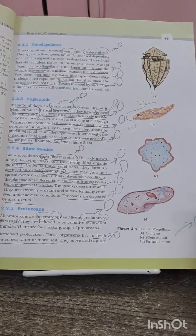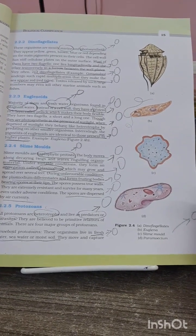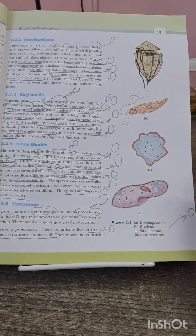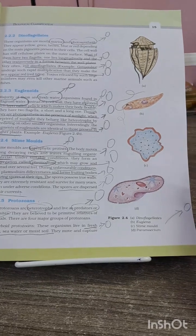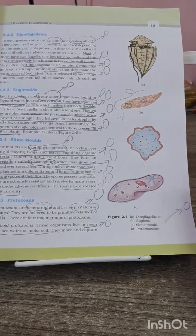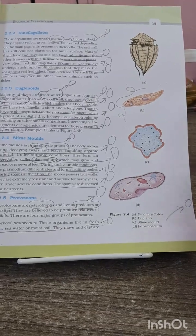Hello everyone, myself Anteri from Zohar Medical College. Today we are going to discuss all the important MCQs from page number 15, chapter 2, biological classification from Class 11 Biology. Now starting with dinoflagellates, the very first important MCQ can be from their habitat, that is marine and photosynthetic.